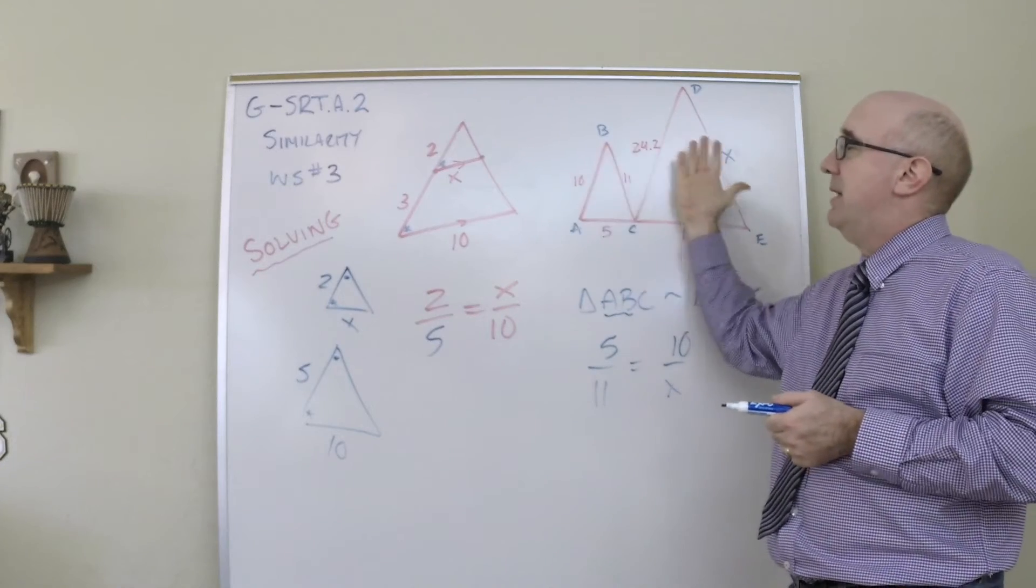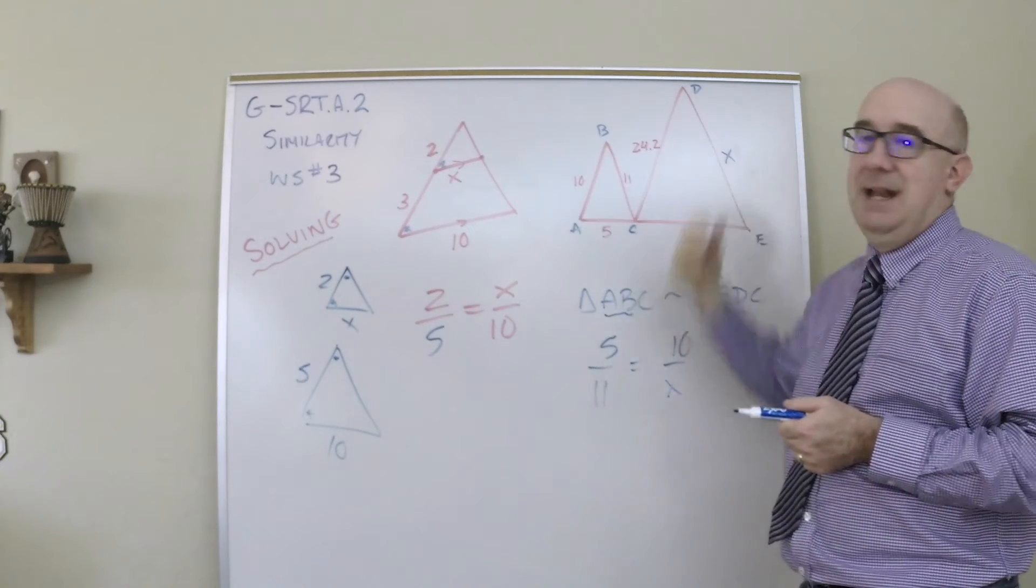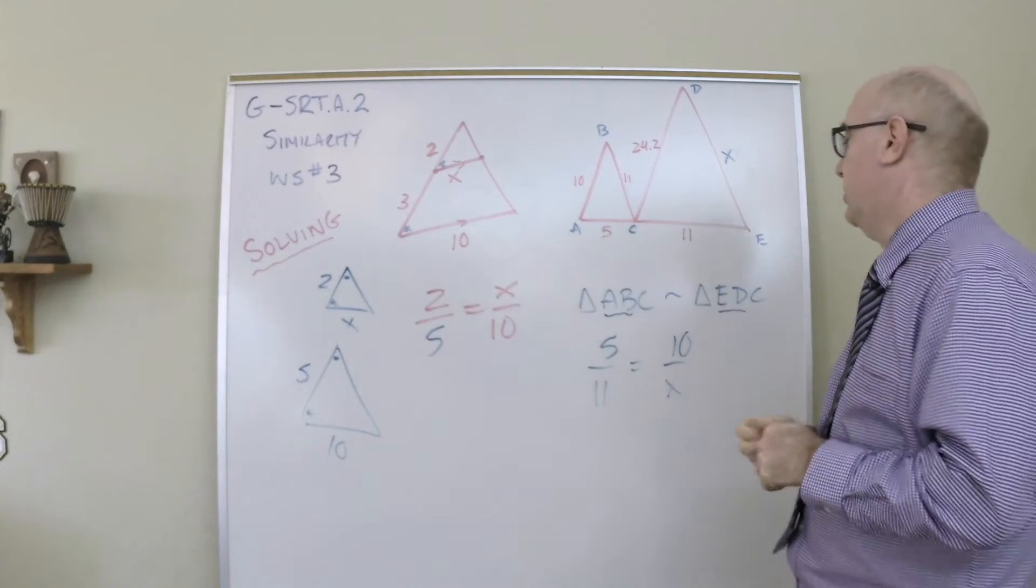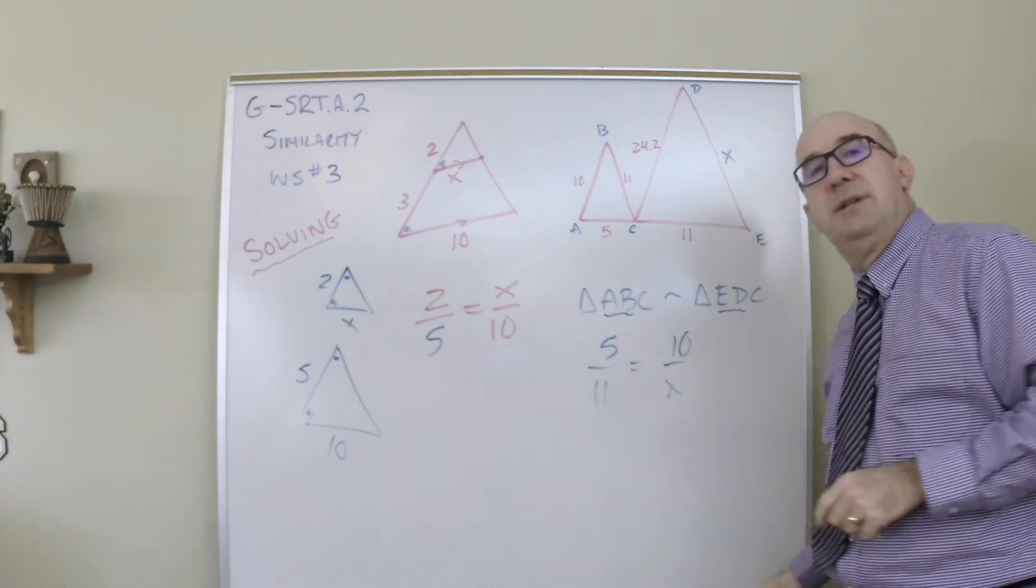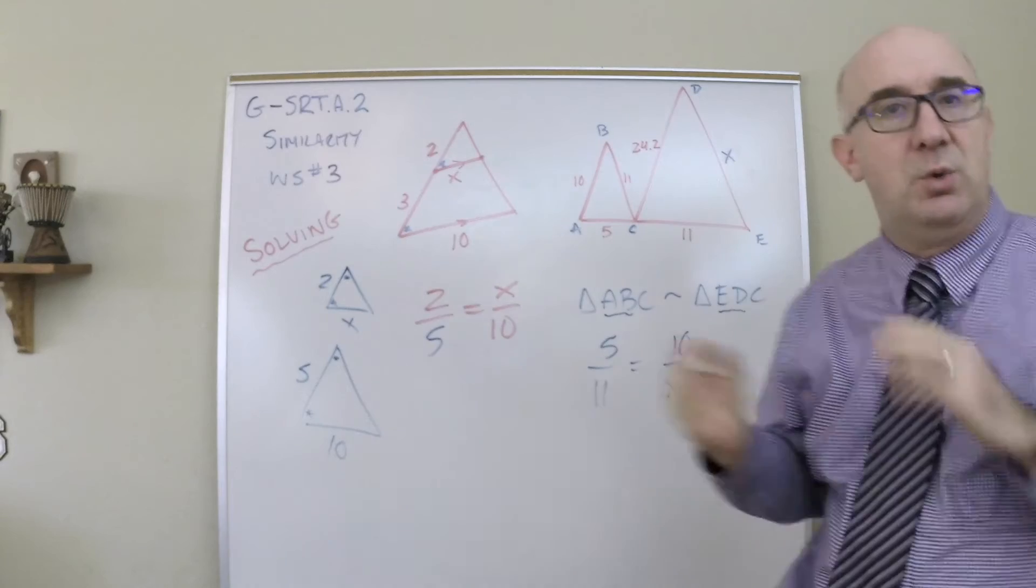I think what's happened is it's been reflected and enlarged. You need to use all of your clues. Use the congruence statement to help you to know who goes to who.